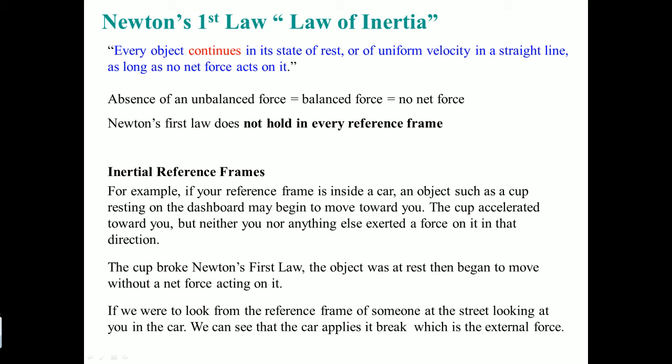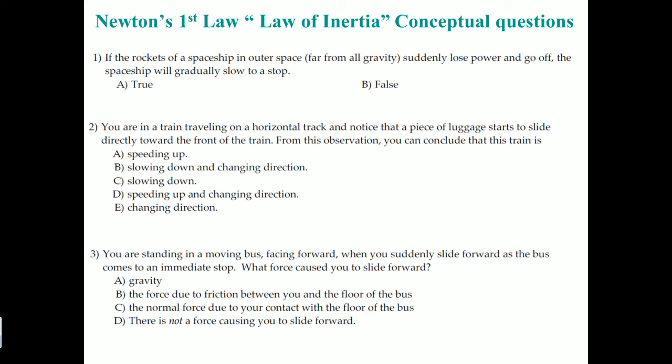If you take the reference frame to be planet Earth, you should be perfectly fine. Here are some questions to help you understand the law of inertia. Question one: if a rocket spaceship is in outer space far from gravity and suddenly loses power, the spaceship will gradually slow to a stop. The answer is false. An object in motion will continue in motion until acted upon by an external force. Because space is more or less empty, there's nothing to slow down the spaceship — so if it was going, it will continue going.